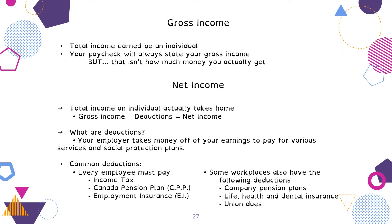So what are the deductions? These are what your employer takes off your earnings to pay for various services and social protection plans. Your employer does this on your behalf so that everybody does it. The percentage depends upon your income. Every employee must pay in Canada income tax, Canada pension plan, and employment insurance. Some workplaces also have other extra deductions like a company pension plan, life, health, dental insurance, union dues, or other things. That will all show up on your pay stub.